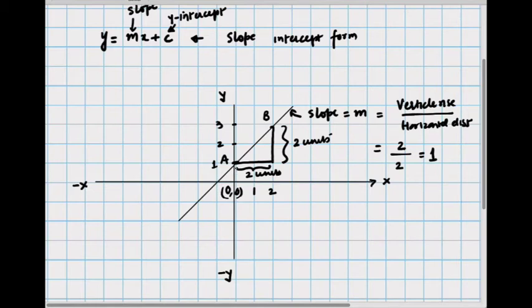So in this case this line cuts the y-axis at a point here which is 1 unit above the origin. So thus positive c becomes 1 or a positive 1.